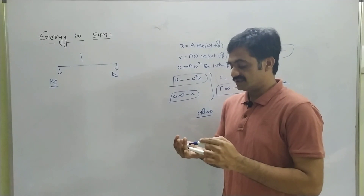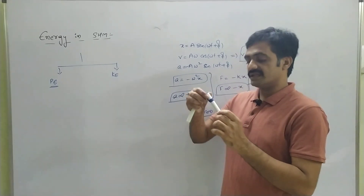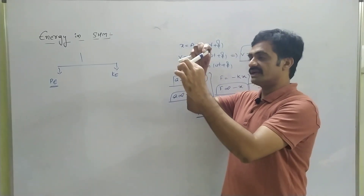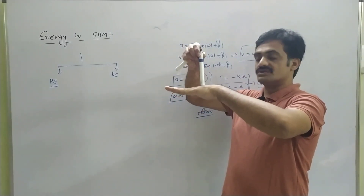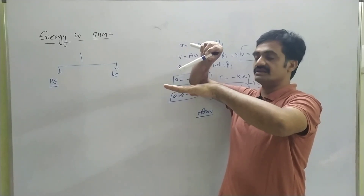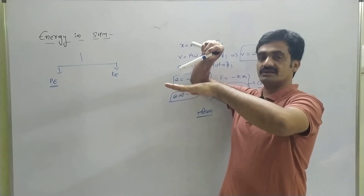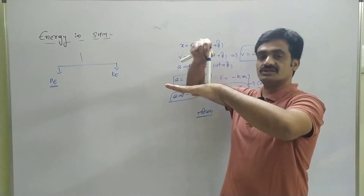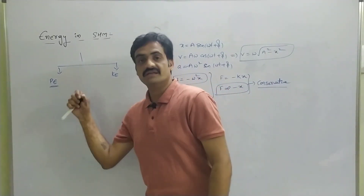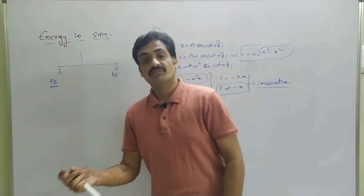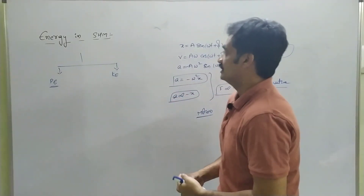Because the body will attain a particular height from the ground, then it reaches back to this position, lifts up to a particular height, and again returns. Based on that, we can represent this potential energy.